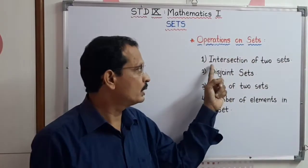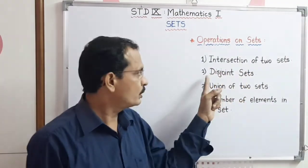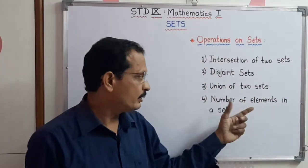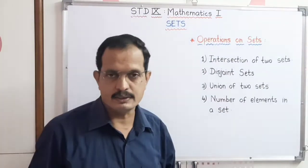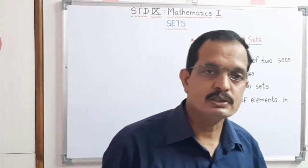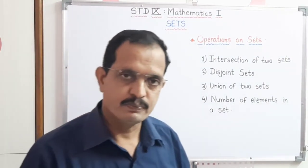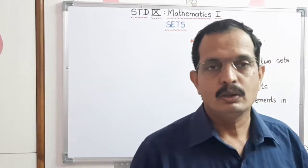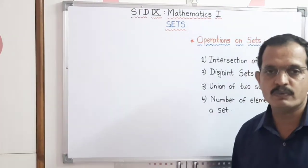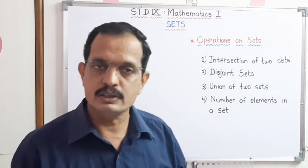In that, we have to learn the intersection of two sets, then disjoint sets, union of two sets, and the number of elements in a set. The relation between the number of elements of the intersection of two sets and the union of two sets is important.